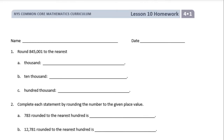Number 1: round 845,001 to the nearest thousand, ten thousand, and hundred thousand. I'm going to start by rewriting 845,001 and round it to the thousands place. First I'll find the thousands place and underline it. To round, I look to the right — the hundreds place — and see if it's five or higher or four or lower. It's a zero, which is four or lower, so the five stays the same and everything behind it turns into zeros. This rounds to 845,000.